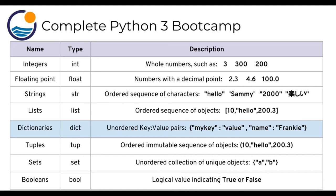We can have something like name, and then colon, and then the value of that name is Frankie. Again, we'll be discussing dictionaries in a lot more detail.